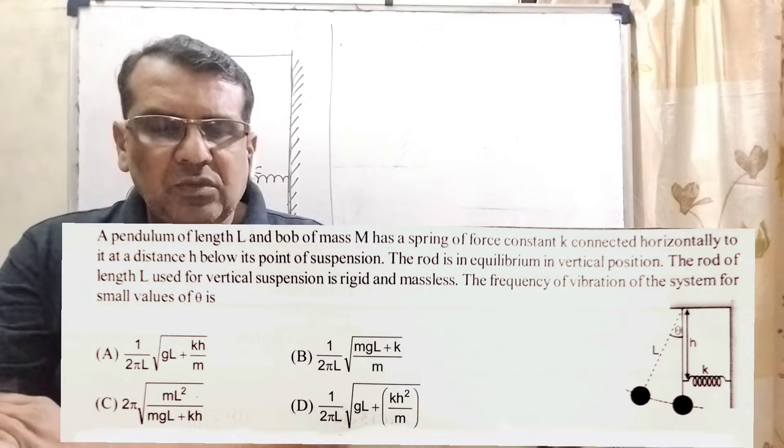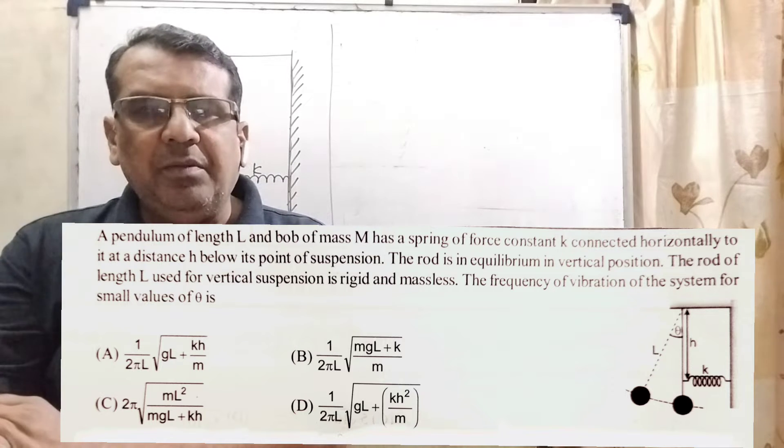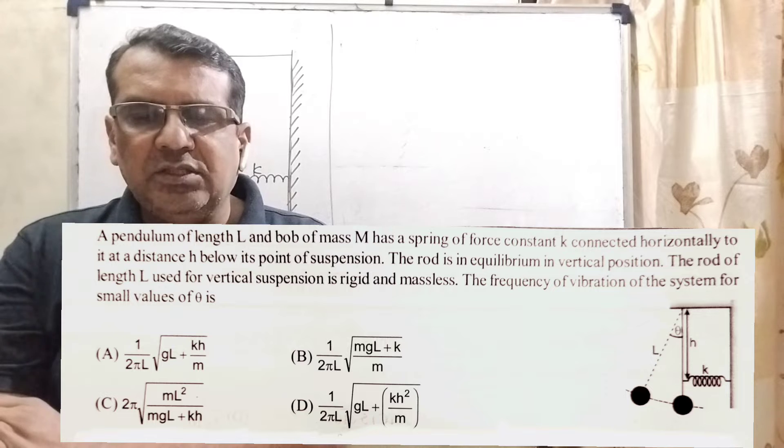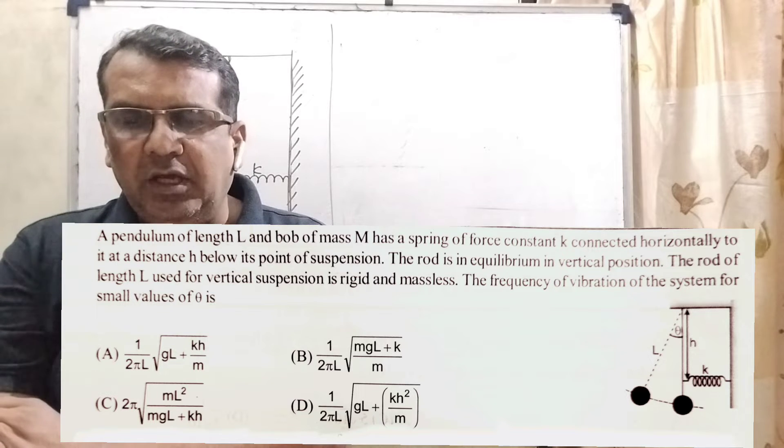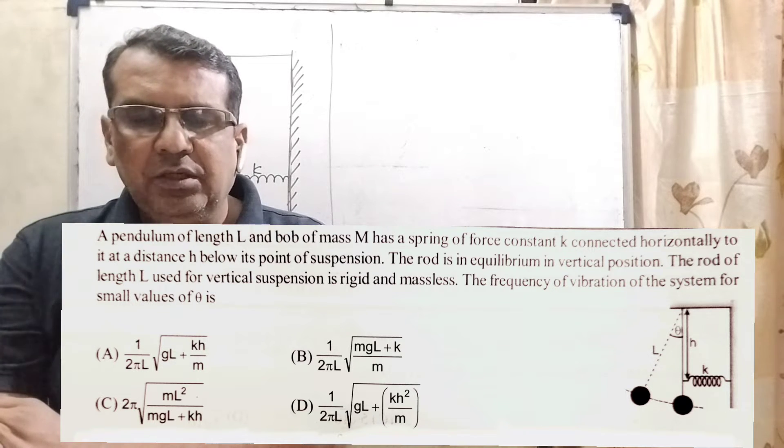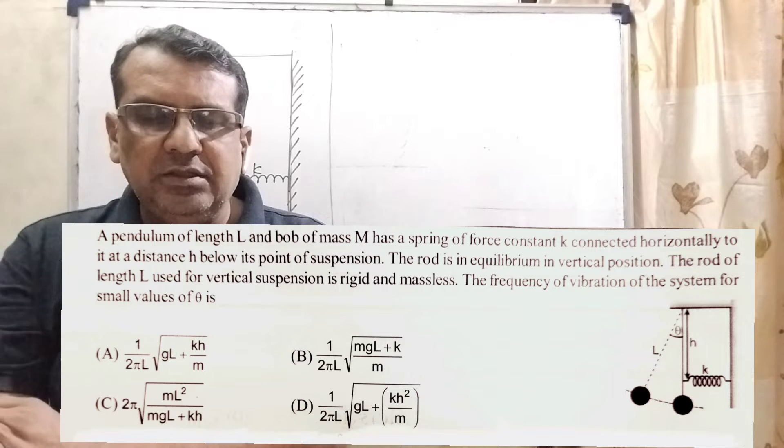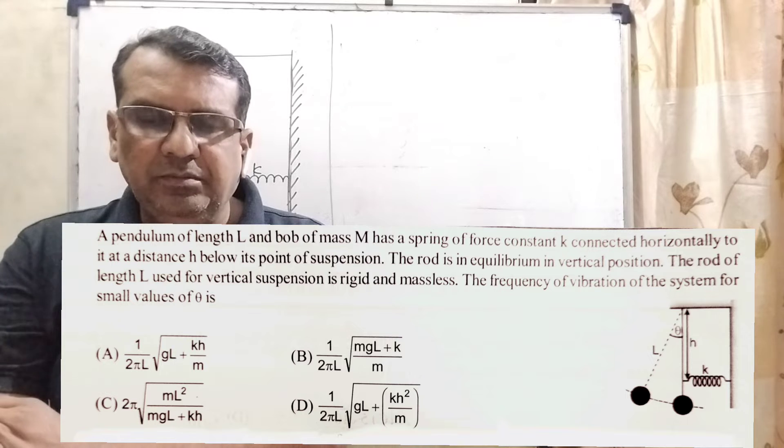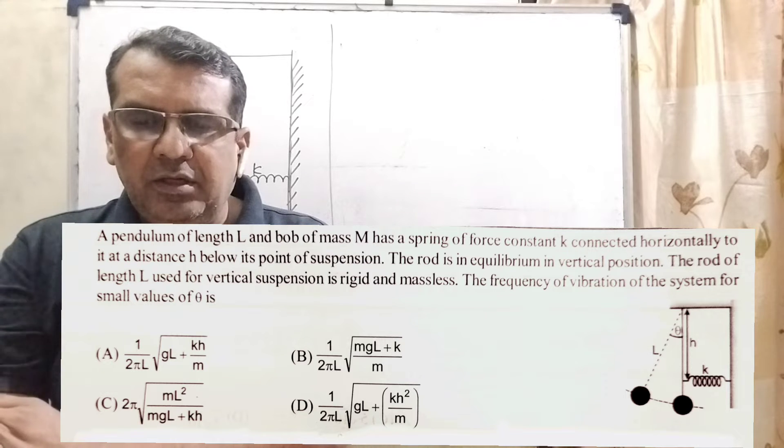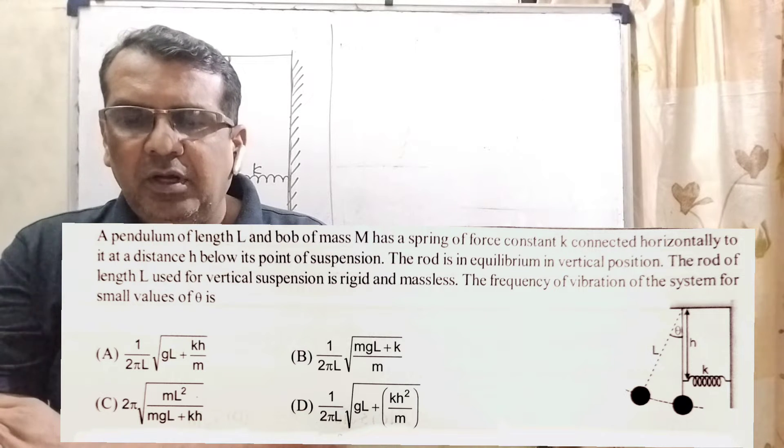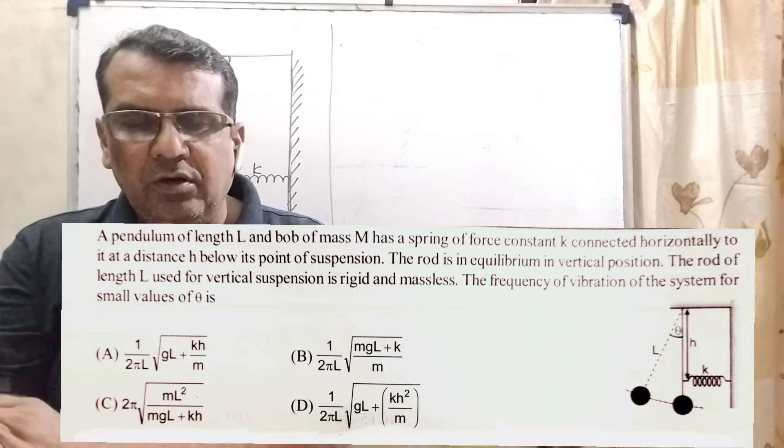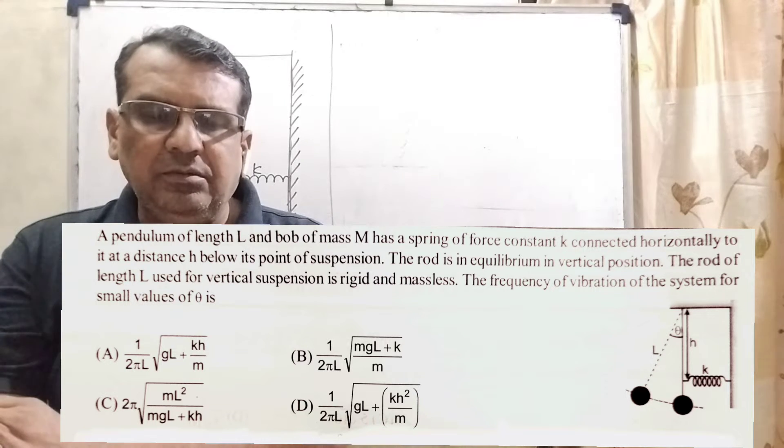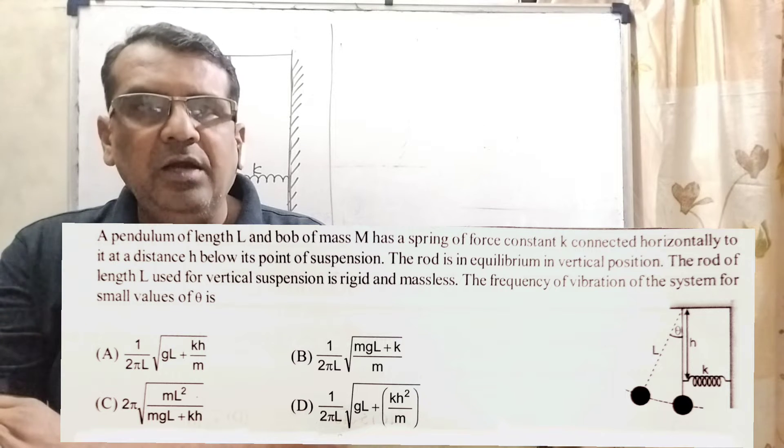Now here is the question. A pendulum of length capital L and bob of mass M has a spring of force constant K connected horizontally to it at a distance H below its point of suspension. The rod in equilibrium in vertical position, the rod of length capital L used for vertical suspension. Vibration is rigid and massless.